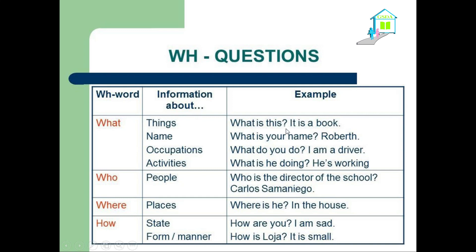We can use this example: What's this? It's a book. To ask about a name: What's your name? Robert. Or occupations and jobs: What do you do? I'm a driver, I'm a teacher, I'm a dentist, I'm a doctor, etc.